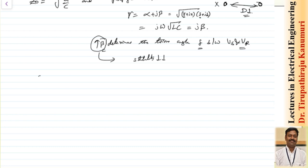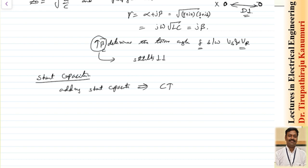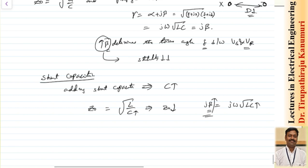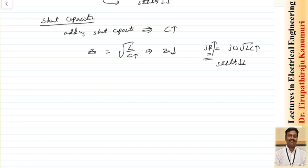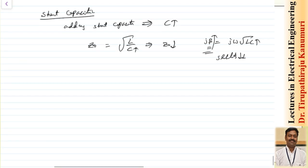The first artificial method is using a shunt capacitor. Adding a shunt capacitor increases the line capacitance C, which decreases Z₀ = √(L/C) — so our purpose seems served. However, β = ω√(LC) also increases when C increases, which decreases system stability. Therefore, shunt capacitors are not preferred for modifying surge impedance; they are used only for reactive power compensation or maintaining receiving-end voltage.